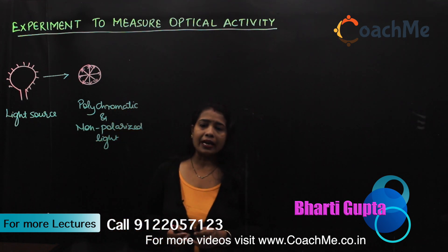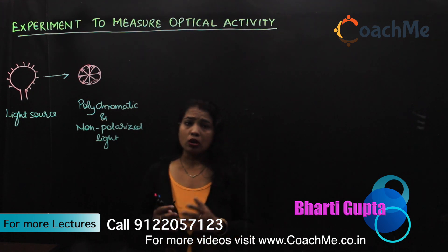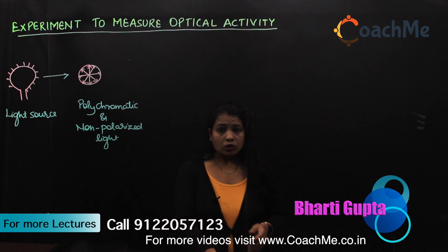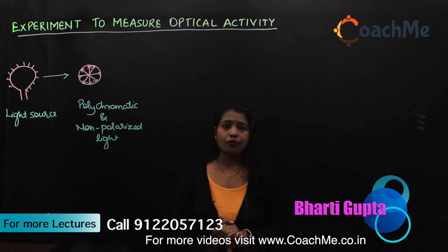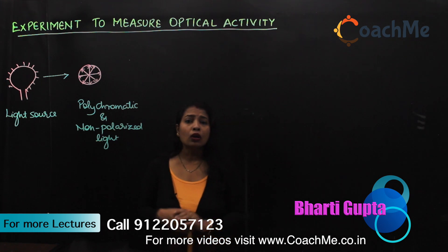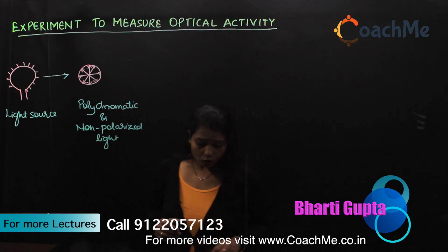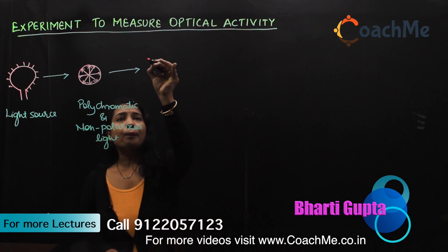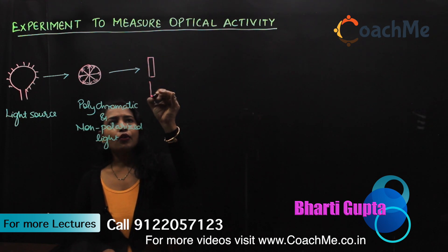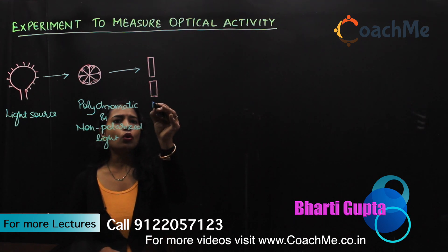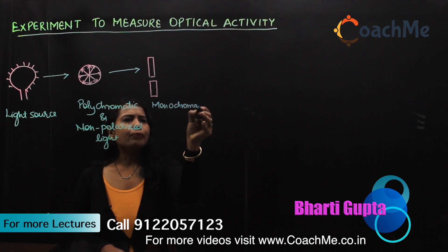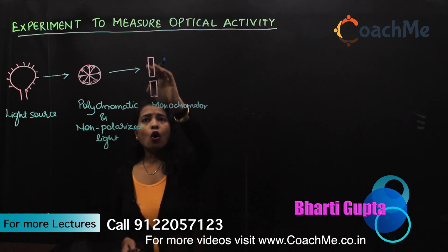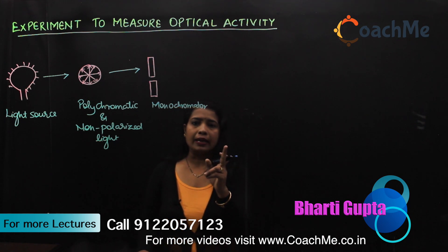For this experiment, what we require is light having all particles of the same energy. Because if any compound affects the light, the effect on light particles having different energy will be different, making it very difficult to conclude how much the compound is affecting the light. So the experimental requirement is light particles of a particular energy. For that, we pass the light through a monochromator — something through which light passes and all wavelengths except one get absorbed.